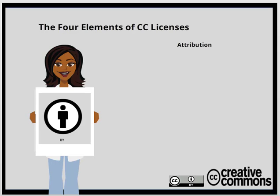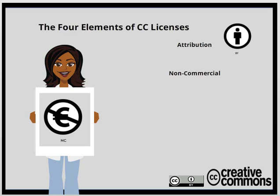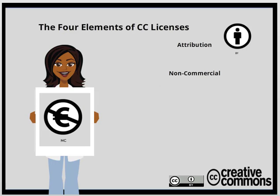We as users need to keep in mind that this is the person or persons who have chosen what the license will or will not be used for. The second element is the icon for non-commercial, or NC, letting the user know they cannot use the creation for monetary gain. This symbol is for the euro, the European currency. Here in the United States it would be a dollar sign, and so on for all countries.